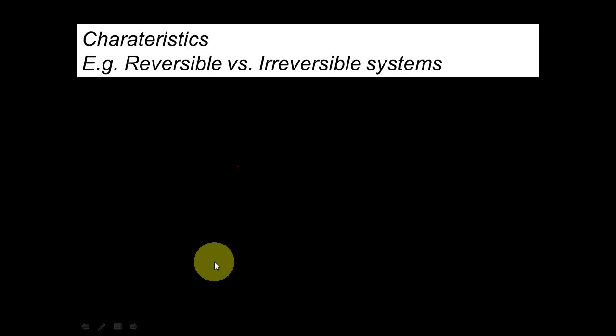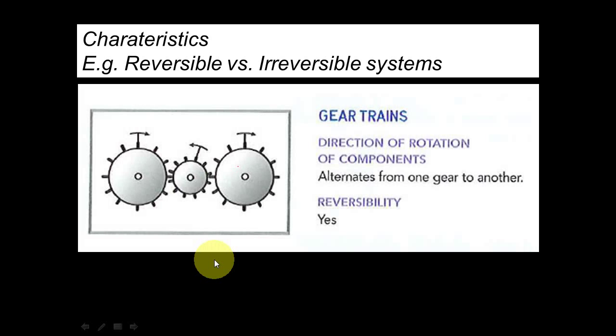So, in terms of reversibility, when I say to you something is reversible, it's reversible, meaning you can go back or forth, right? Now, in this case, you have to really understand that this gear train system is reversible. It can go back or forth. There's nothing stopping you. Now, it alternates from one gear on to another.